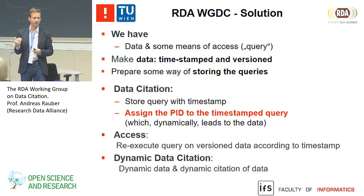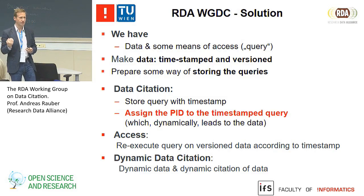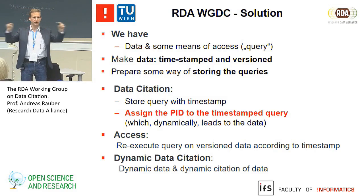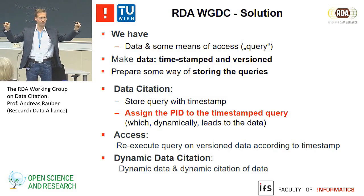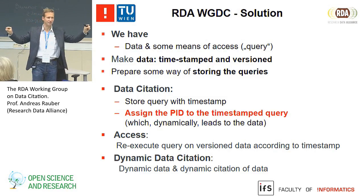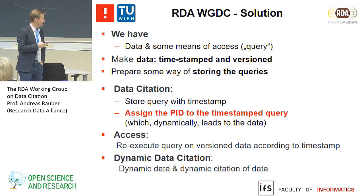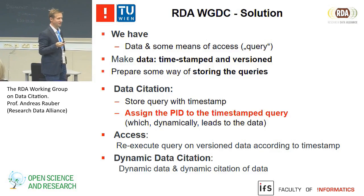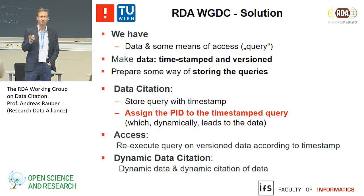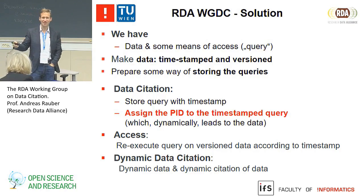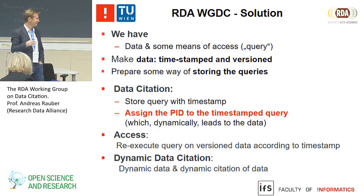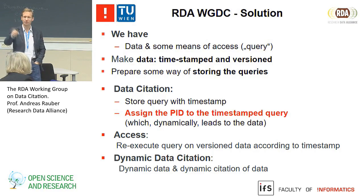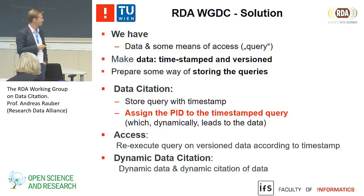That way you have a timestamped query and a timestamped, versioned database. If you want to get back to the original data, all the system has to do—and it has to be transparent—is re-execute the timestamped query against the timestamped database. You can always get back to exactly the same subset of data. The only storage overhead is storing the query string, which is minimal. This working group was referred to as the dynamic data citation working group, because of dual dynamics: the data itself is dynamic, and the citation resolution is also dynamic—you point to a static query that you then dynamically resolve to the data.